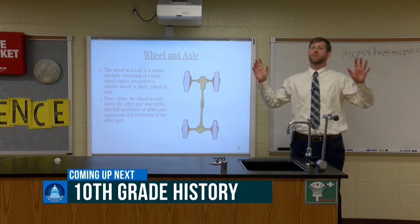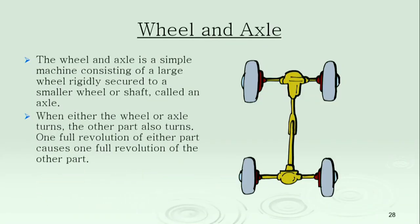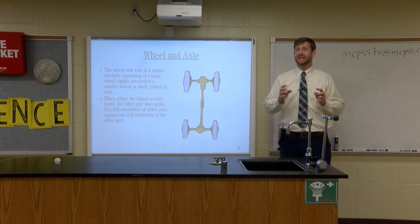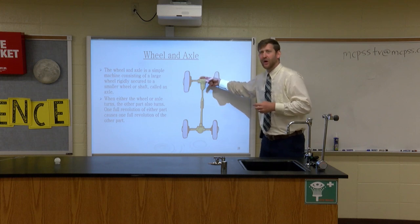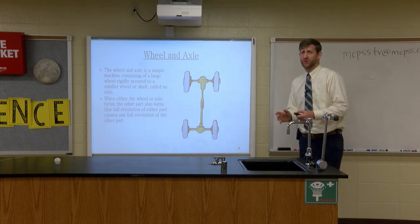Wheel and axle — my favorite simple machine of all time. This looks like the axle of your car. A wheel and axle is a small axle connected to a large wheel. One complete rotation of the small axle is one complete rotation of the huge wheel. So if you use a little energy to turn this axle, you're using small amounts of energy to turn this huge wheel. That's the science behind motors and engines in your car — all they have to do is turn the tiny axle to make the big wheel go.